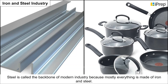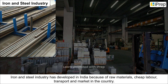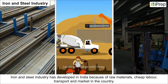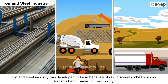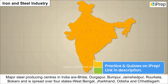Steel is called the backbone of modern industry because mostly everything is made of iron and steel. The iron and steel industry has developed in India because of raw materials, cheap labor, transport, and market in the country.